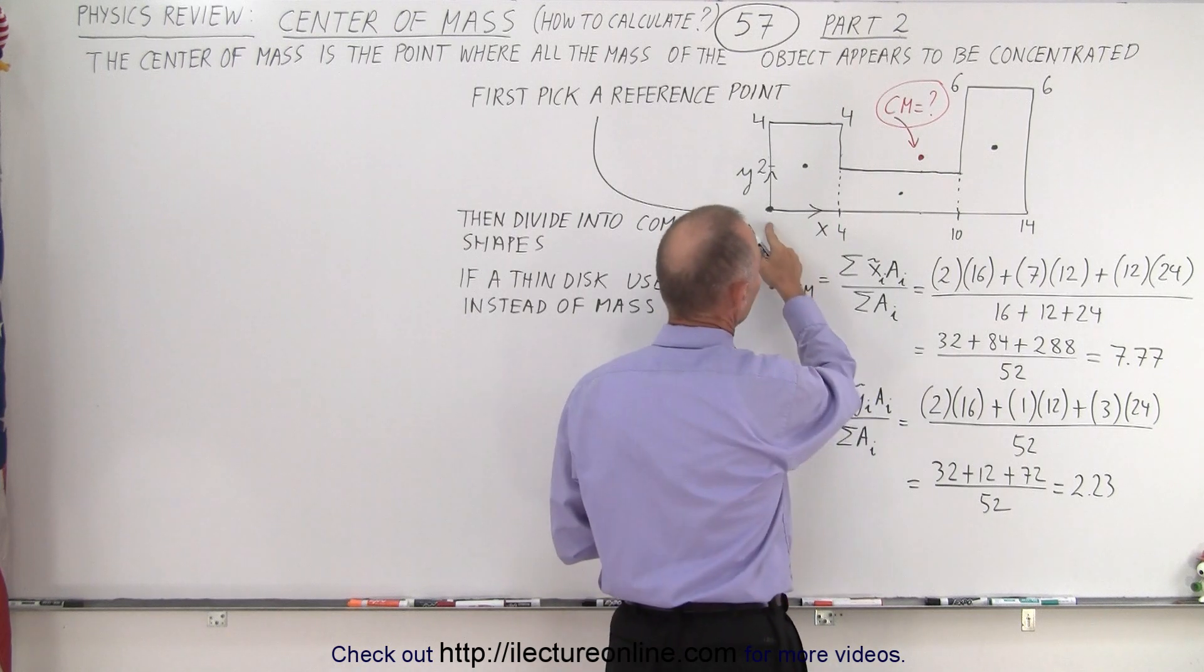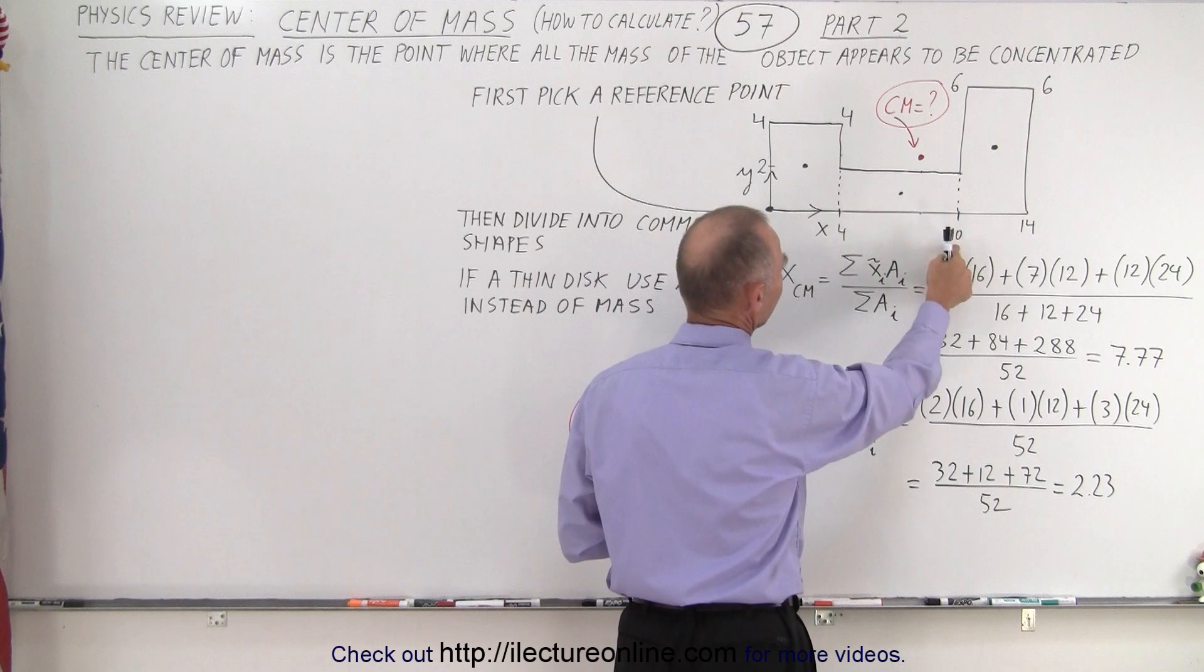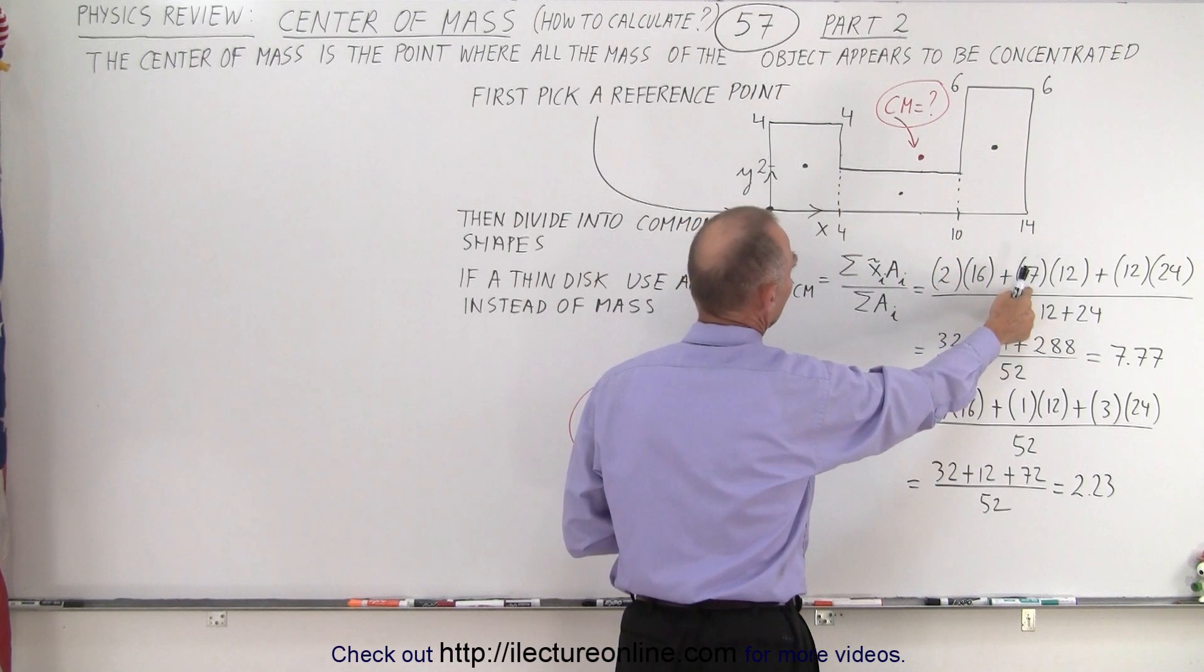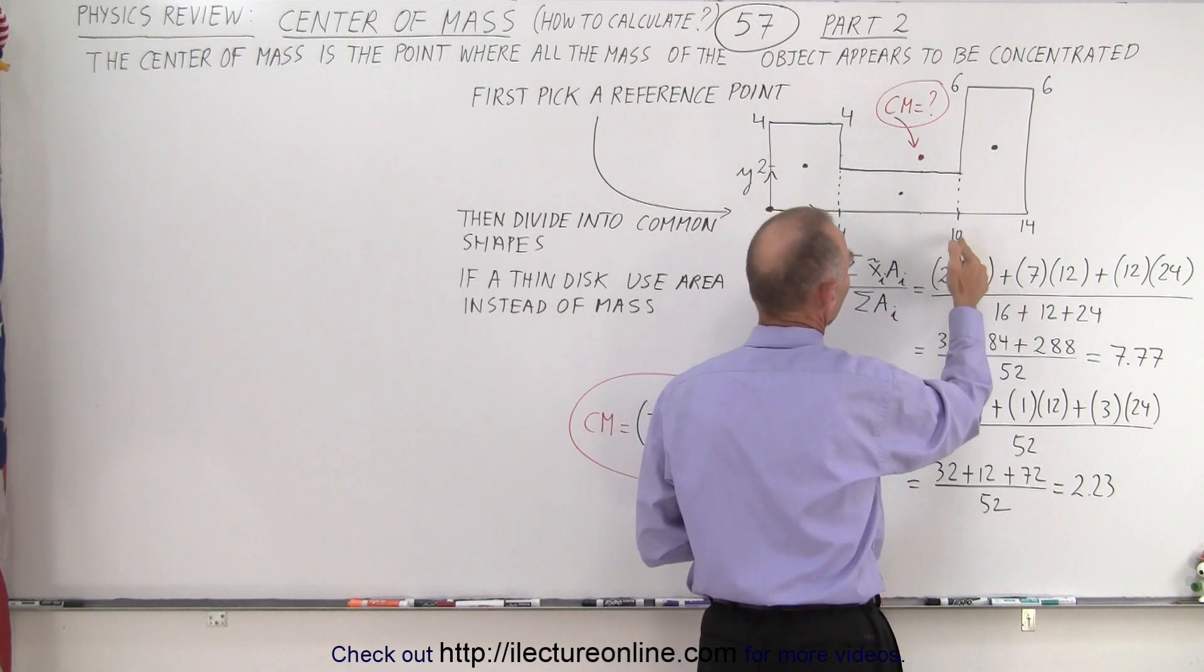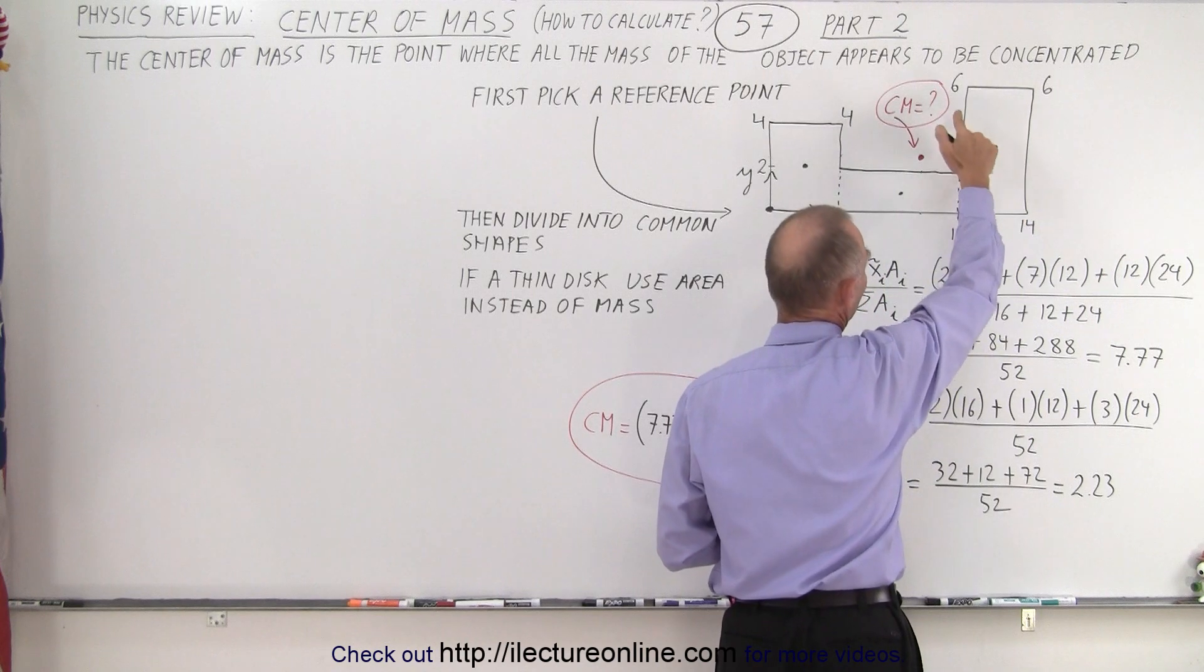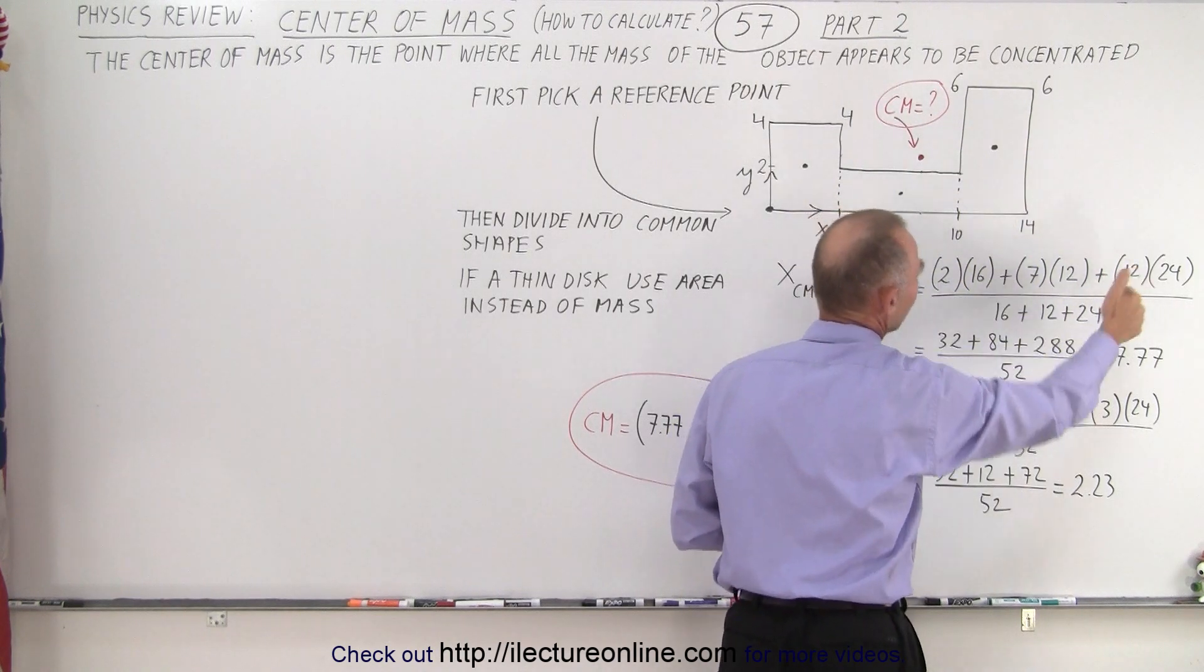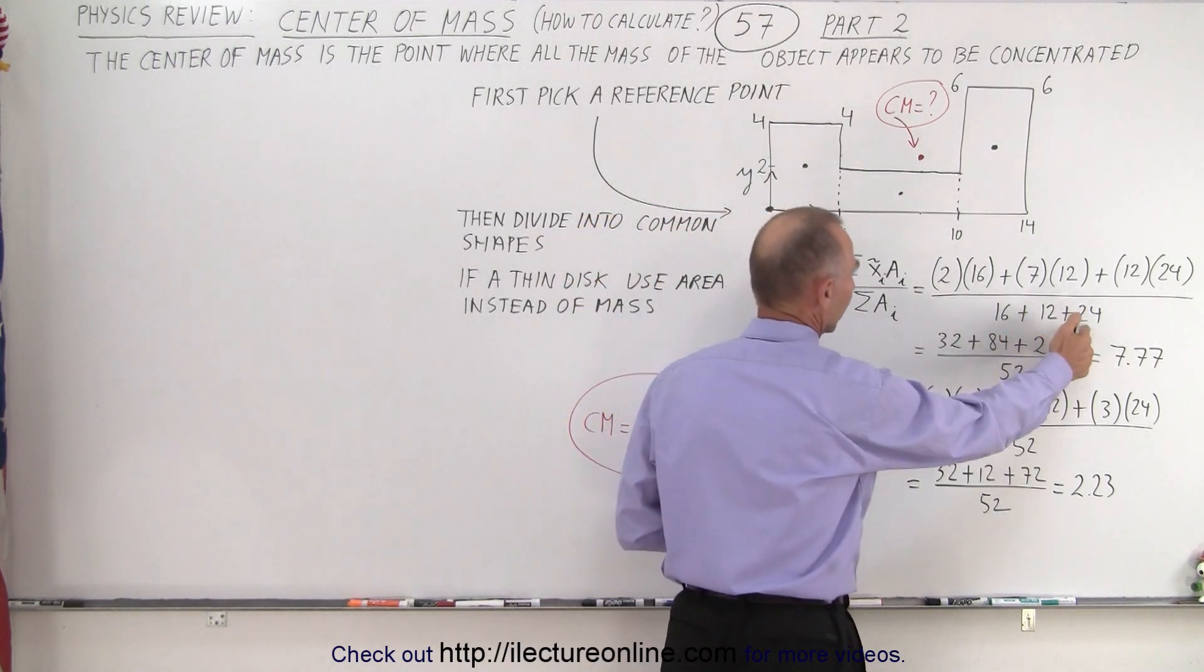In the x-direction, the center of mass to this object, notice it's halfway between 4 and 10 which is 7 and the area that would be 2 by 6 which is 12. And here, the center of mass would be halfway between 10 and 14 which is 12 and the area is 6 by 4 which is 24. And of course, we have all areas 16 plus 12 plus 24.